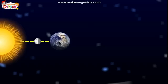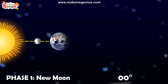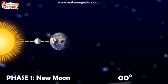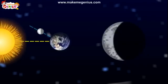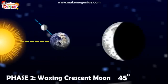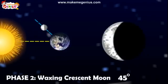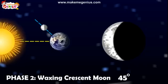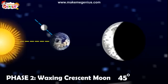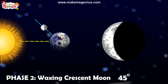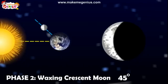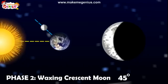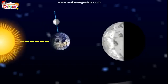Phase 1 is called the new moon. In this phase, we cannot see any part of the illuminated half of the moon. Phase 2 is called the waxing crescent. Waxing means that the moon is going from a smaller size to a larger size. Crescent means that it is between new moon and half moon. It looks like a sickle, like when you take a bite out of a cookie.